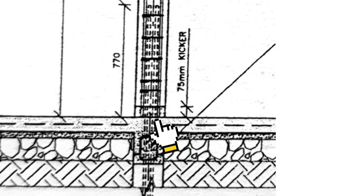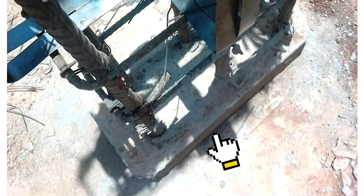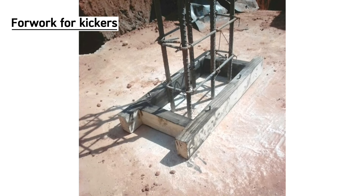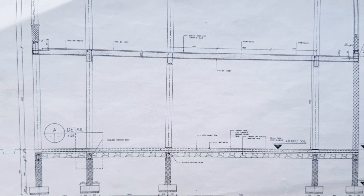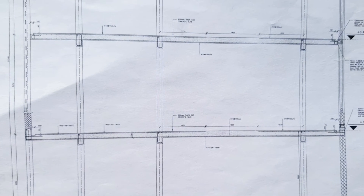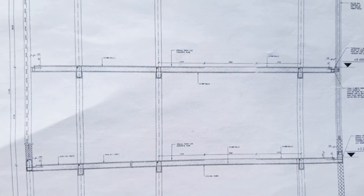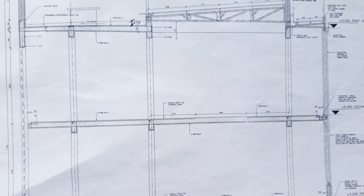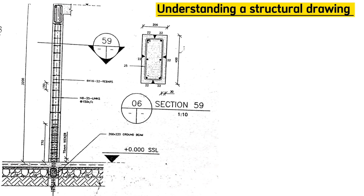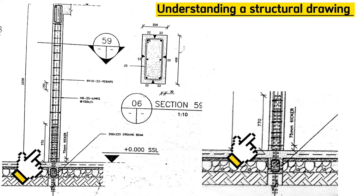Make a kicker for every column on every level — for all columns at the underground level, first floor, second floor, third floor, and so on as you go up. Also be sure to leave an extra 770 millimeters above the slab where the next column will start from.